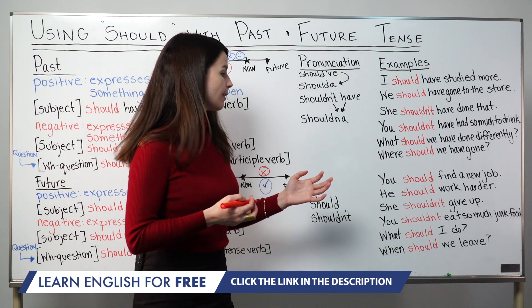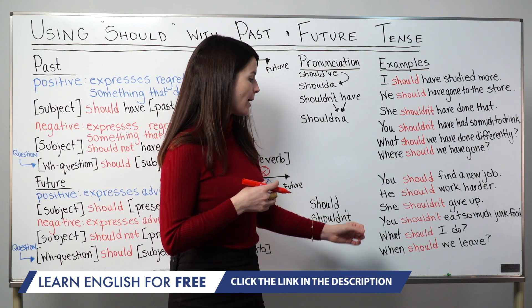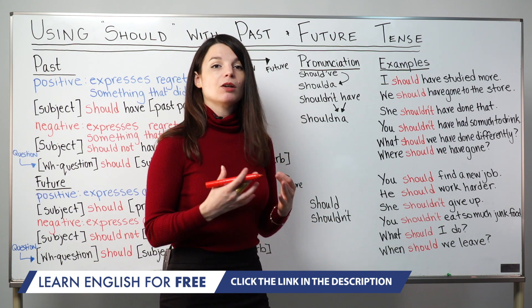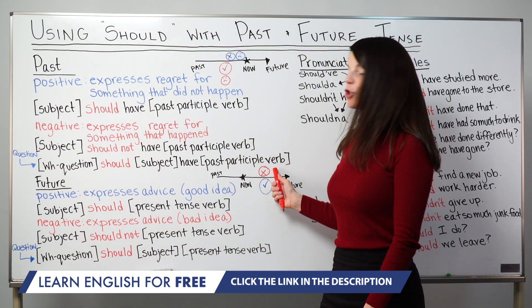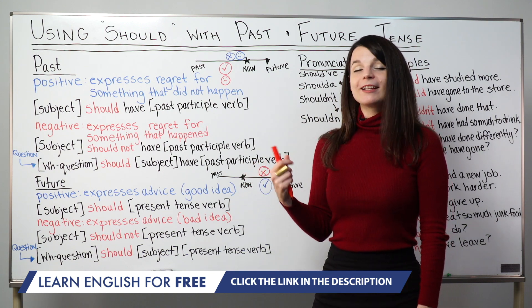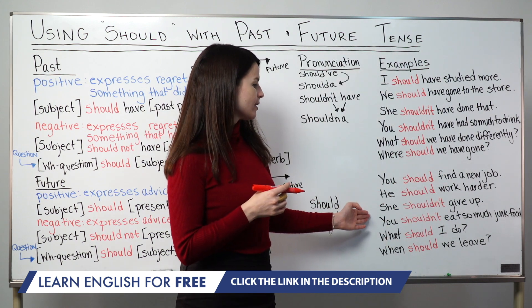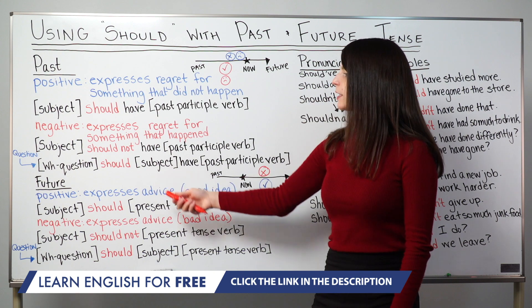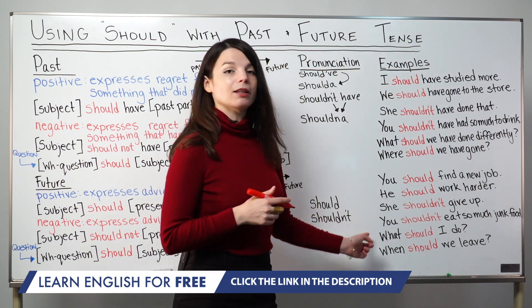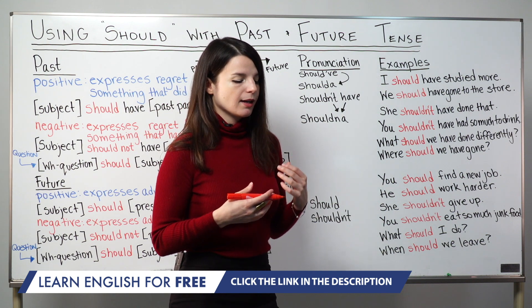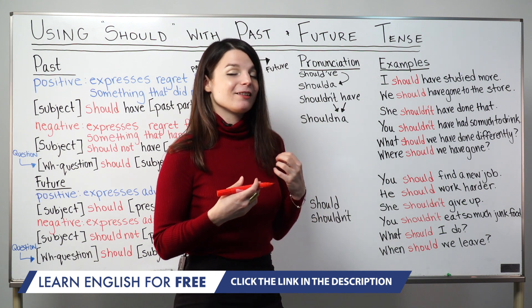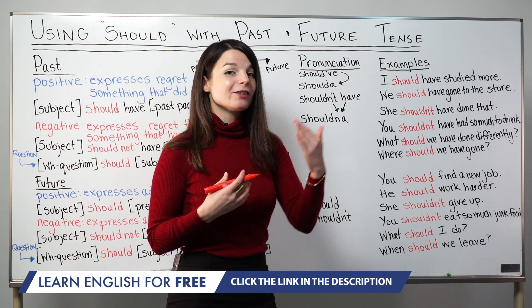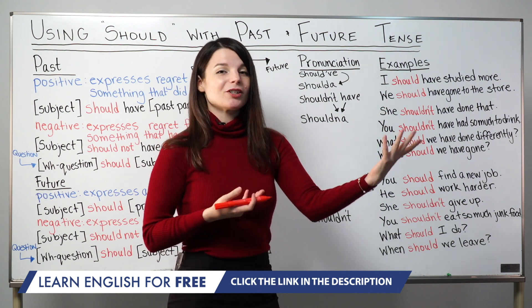Now for negative statements: She shouldn't give up. And: You shouldn't eat so much junk food. Both express something the speaker thinks is a bad idea. Giving up is a bad idea; eating a lot of junk food is a bad idea. This is called future because it's advice from this conversation onward — for instance, the speaker might be watching someone eat junk food and offer this advice going forward.